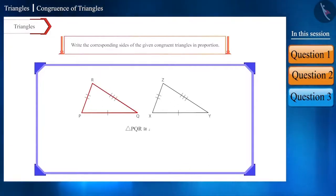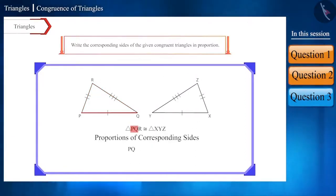According to the figure, triangle PQR is congruent to triangle XYZ. And now the proportions of their corresponding sides will be like this. Side PQ corresponds to side XY, side QR corresponds to side YZ, and side PR corresponds to side XZ.